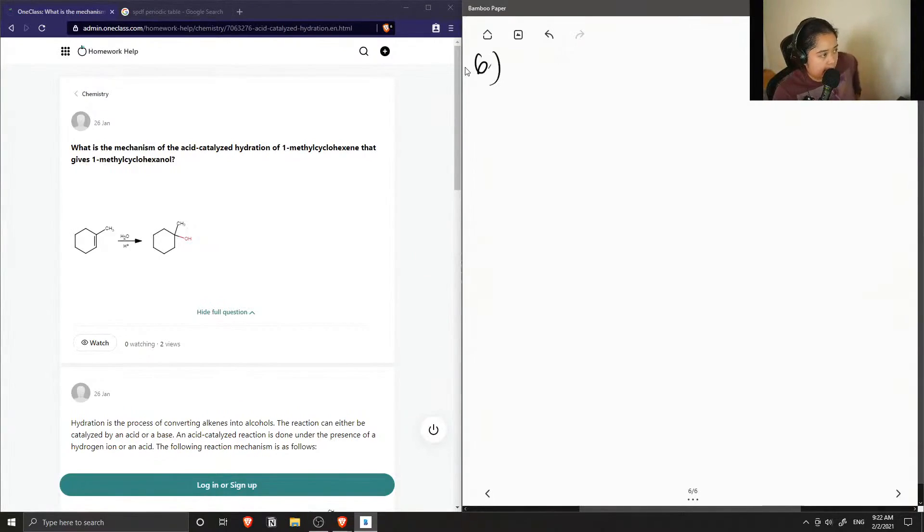What is the mechanism of the acid-catalyzed hydration of 1-methyl-cyclohexene that gives 1-methyl-cyclohexanol? When we have a hydration reaction, this is the conversion of the alkenes to an alcohol group.